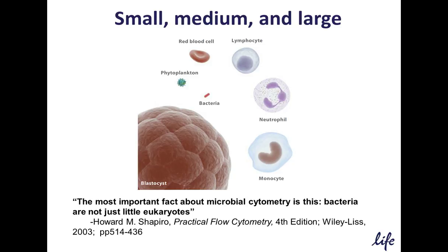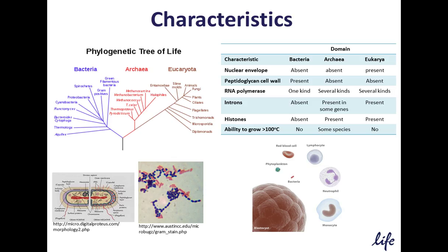One of my favorite expressions concerning analysis of microbes in flow cytometry comes from Howard Shapiro in his book Practical Flow Cytometry. In it, he states: 'The most important fact about microbial cytometry is this — bacteria are not just little eukaryotes.' Not only are bacteria much smaller than eukaryotes, they also have distinct morphological and genetic differences. Bacteria have no nuclear envelope, have peptidoglycan within their cell wall, only one kind of RNA polymerase, and their DNA does not contain introns — whereas archaea and eukaryotes have several kinds of RNA polymerase and introns are present in both to some degree.